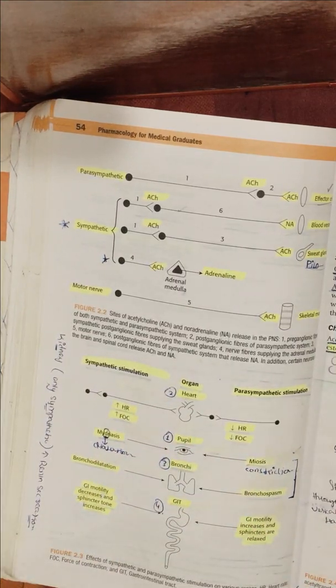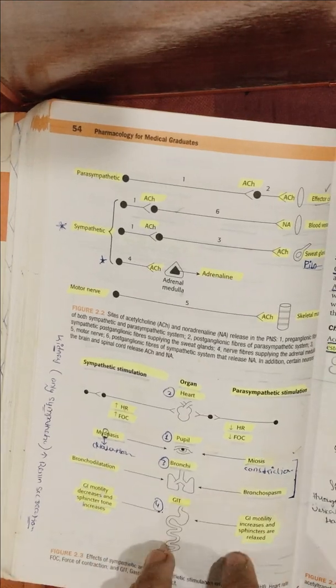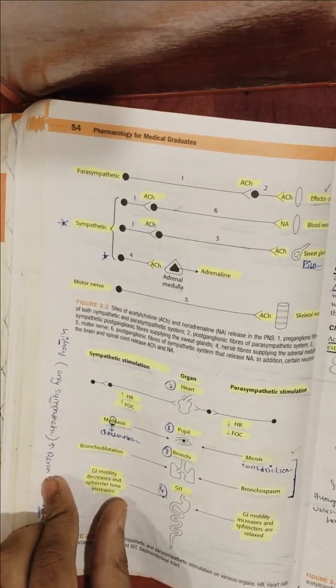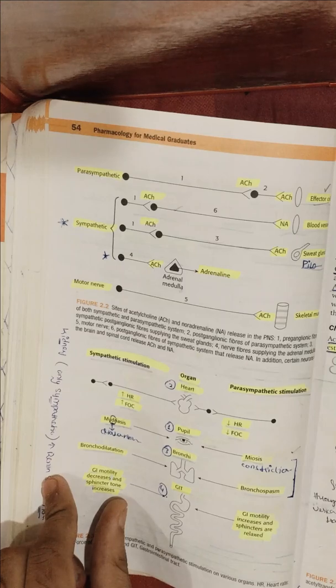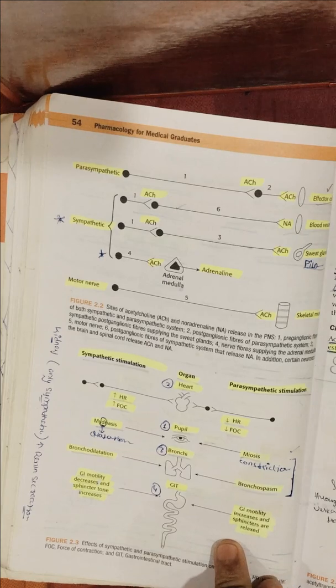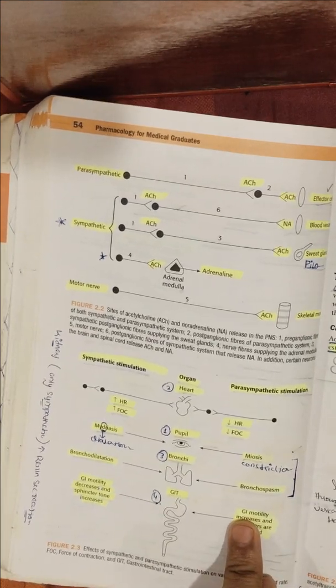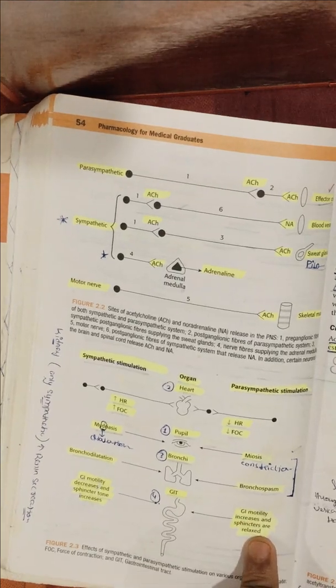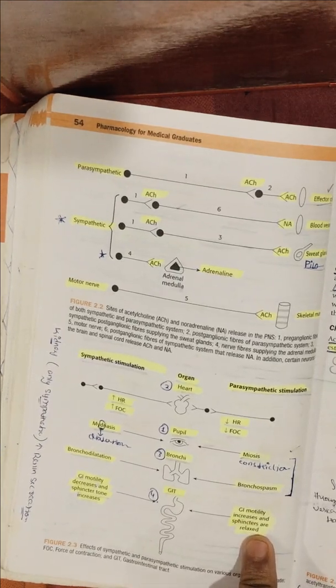In the GIT, sympathetic stimulation reduces peristalsis and causes constriction of the sphincters. On the other hand, parasympathetic stimulation does the opposite: it increases motility and peristalsis, and relaxes the sphincters.